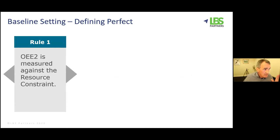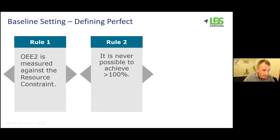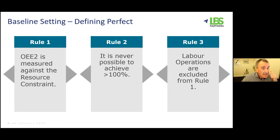There are three rules we set. First, OEE is measured against the resource constraint — generally the bottleneck operation in the machine. Second, if we're doing it properly, we should never see OEE greater than 100%. If we do, it just means we haven't defined perfect correctly. Third — sometimes contentious in implementation — labor operations must be excluded from the resource constraint. The resource constraint is an equipment constraint, not a labor constraint.